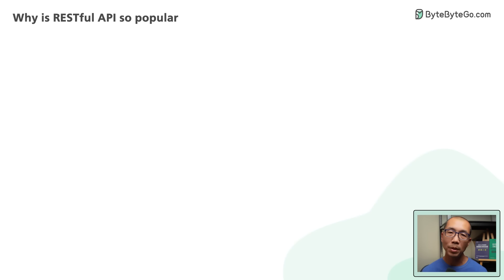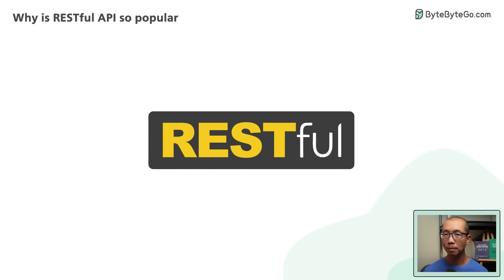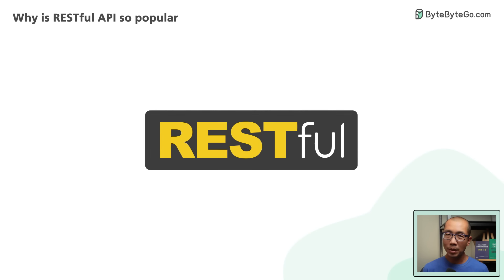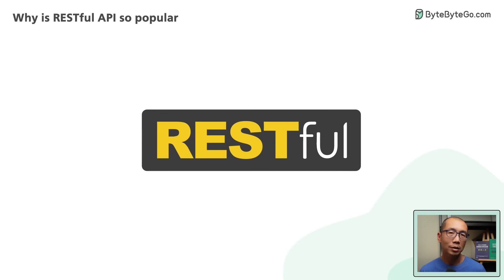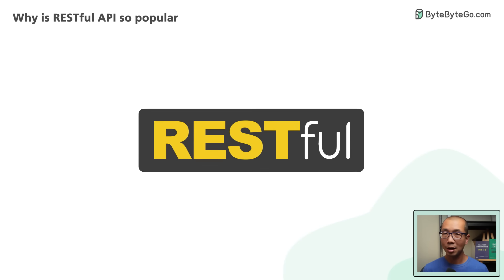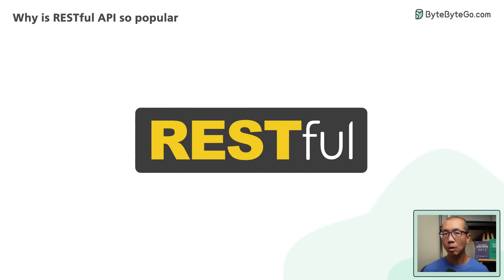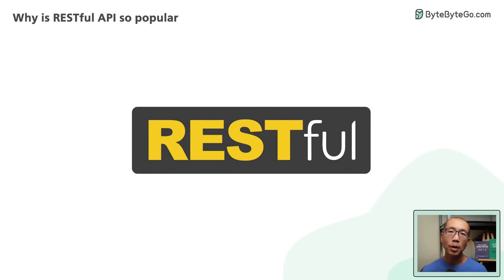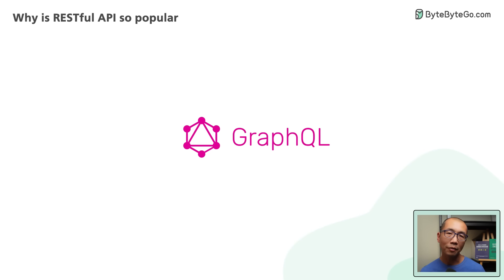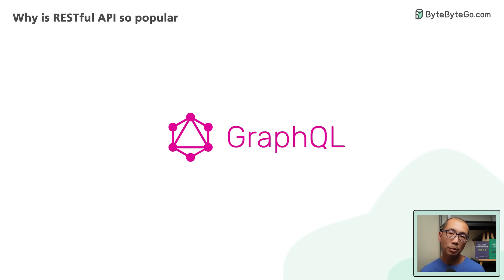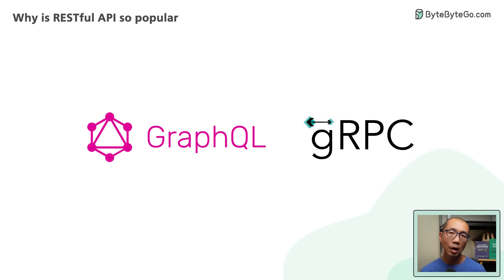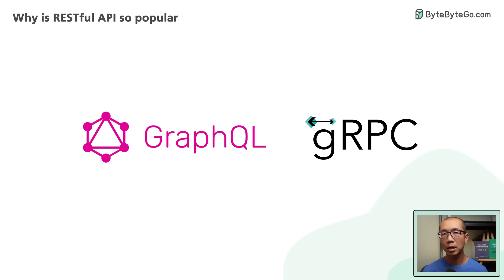RESTful API is simple and effective when applied sensibly. It may not be the best choice for all companies, but it is simple and good enough — and that's why it is so widely used. There are other popular API options like GraphQL and gRPC, which we'll discuss and compare in separate videos.